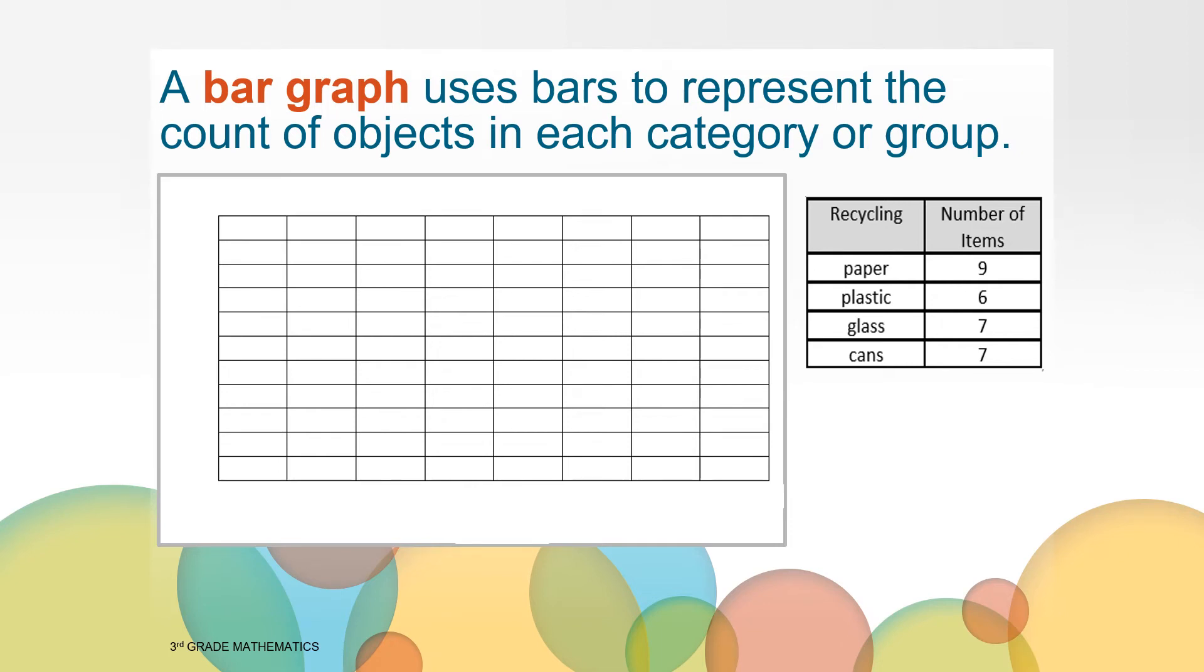First, we'll start by labeling the categories or groups at the bottom of our graph. When making a bar graph, it is important to leave spaces between each of the labels to keep the categories separated. We'll also add a title for these groups so that when someone else is reading our graph, they will know what these groups are about. These are the recycled items, so that is what we will put as the title for these groups. Next, we will color a bar for each category to show how many recycled items we counted for that group. To help us count, we'll add numbers to the left side of our bar graph. We'll put a label to tell us what these numbers stand for. Let's title it Number of Items. Take a moment to write those numbers on your graph now. Don't forget to start with zero on the bottom line.